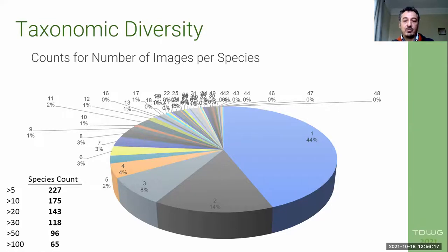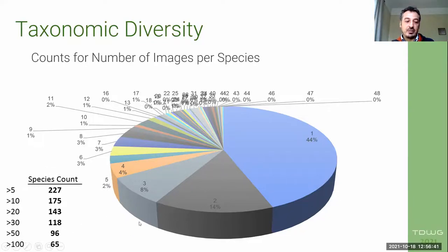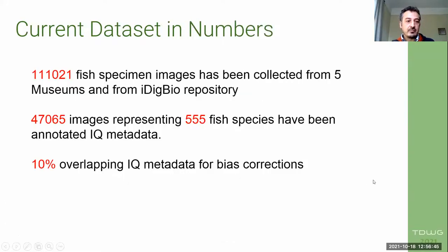Taxonomic diversity was another challenge. Most species were represented by only one or two images — this is more than half of the dataset. Our neural network people prefer to use more than 20 images per species. Our numbers: we gathered more than 100,000 fish images from iDigBio and five museums, with 47,000 images representing 555 fish species captured.